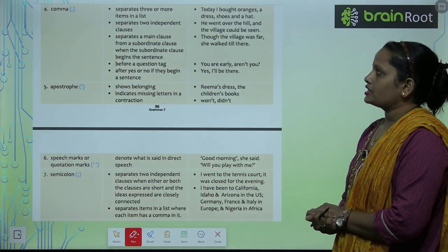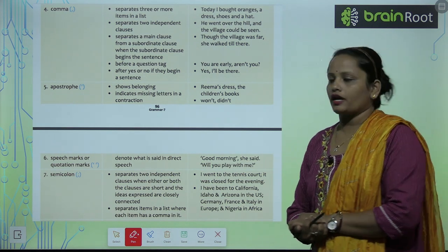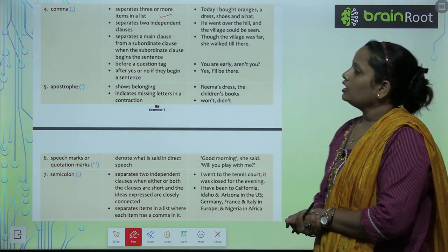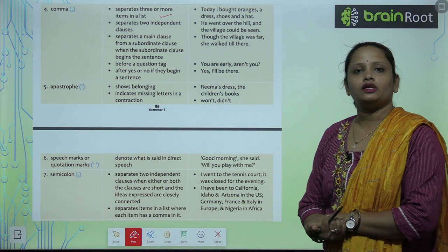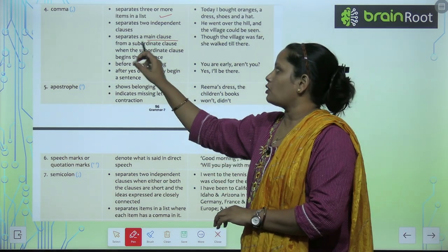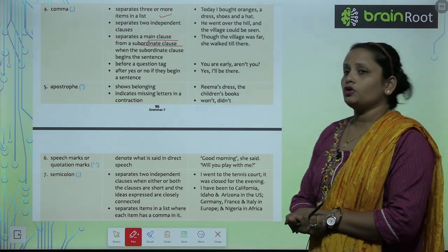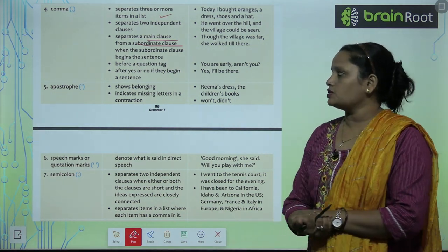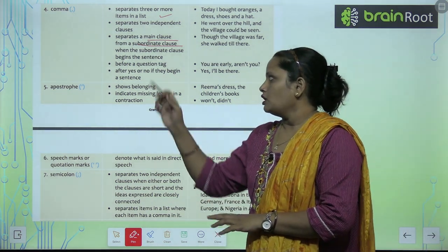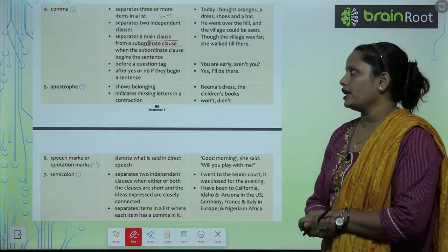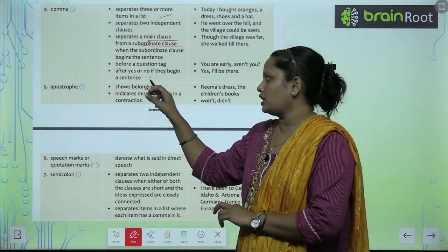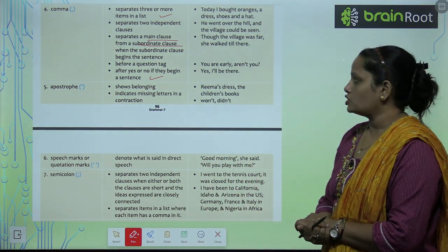Next is comma. It separates three or more items in a list. It separates two independent clauses. It separates a main clause from the subordinate clause when the subordinate clause begins the sentence. It is also used before a question tag and after a yes or no if they begin a sentence.